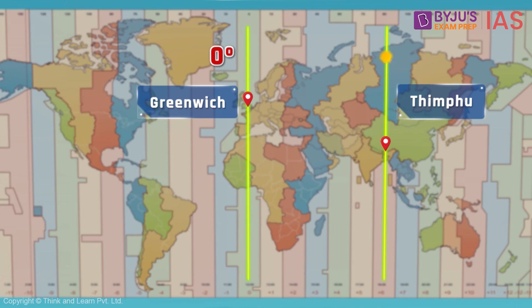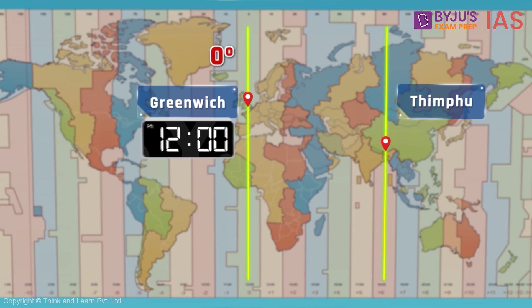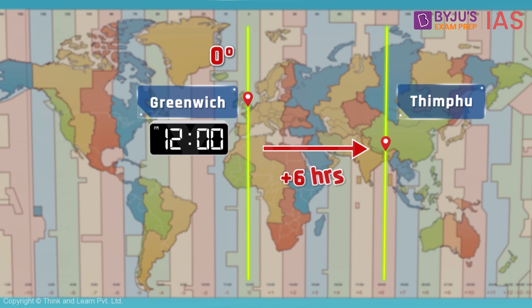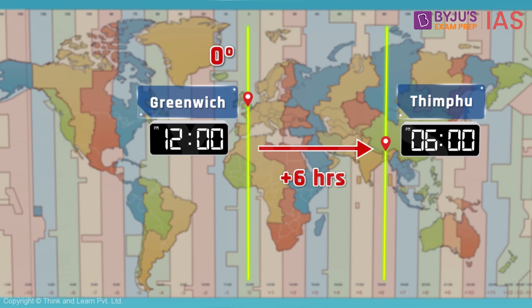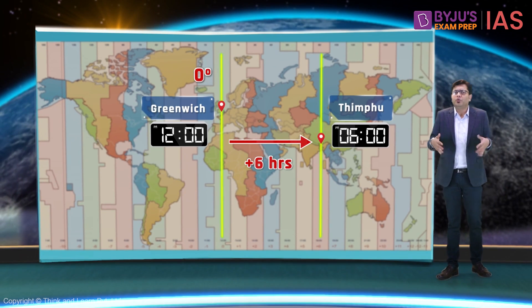Now, Thimphu is to the east with respect to Greenwich, which means the sun would have already passed over Thimphu and right now would be above Greenwich where it is showing 12 noon. This means Thimphu's time will be six hours ahead of Greenwich, or Greenwich's time would be six hours behind Thimphu. Thus, Thimphu's local time shall be 6 PM.